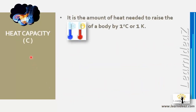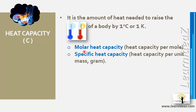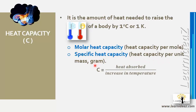In calorimetry, we need to define heat capacity, represented by c. Heat capacity is the amount of heat needed to raise the temperature of a body by one degree Celsius or one Kelvin — these are equivalent by scale. We have two types: molar heat capacity (per mole) and specific heat capacity (per gram). c is defined as heat absorbed divided by the increase in temperature.